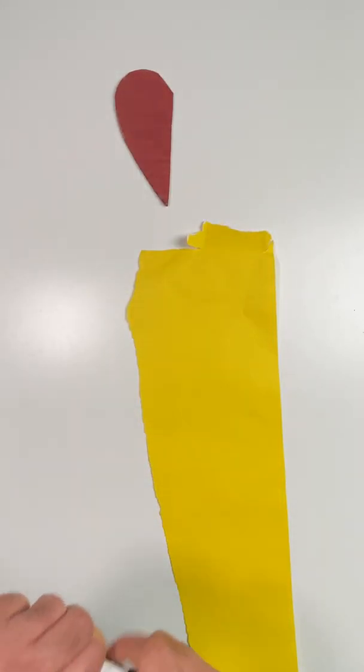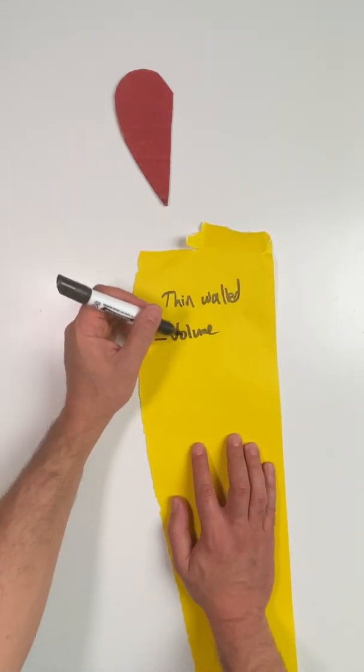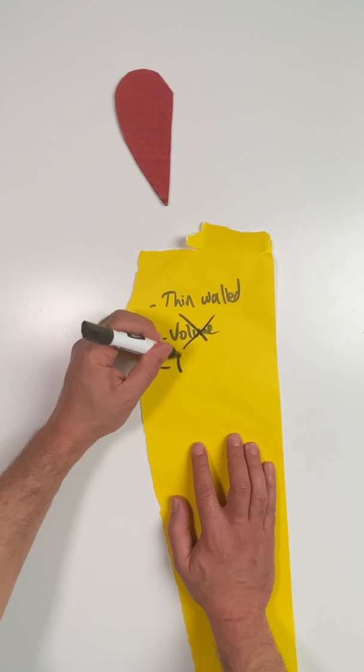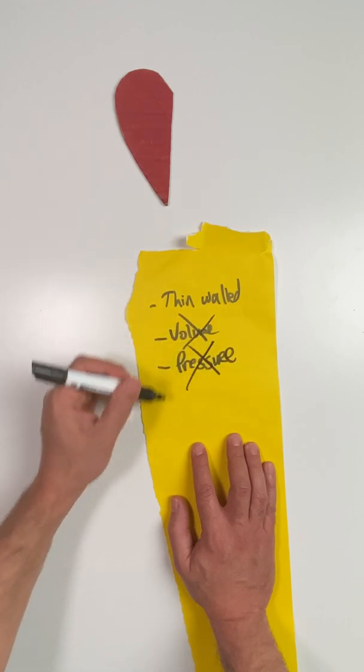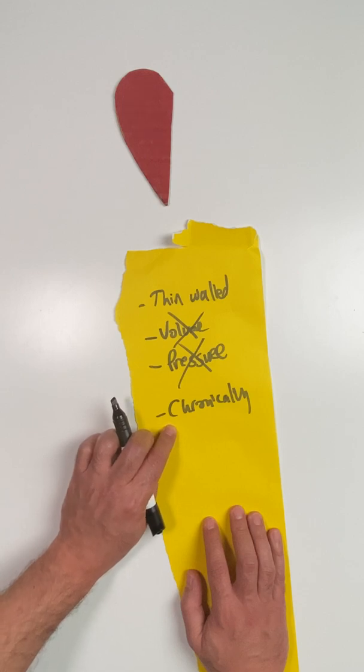Just as a brief review, remember the RV is a little bit different than the LV. It's thin-walled, it doesn't like changes in volume, it doesn't like changes in pressure. It doesn't adapt well to acute changes, but chronically it can become hypertrophied and deal with stresses in the system.